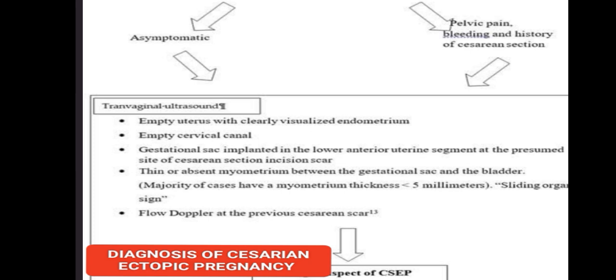It can even extend to the bladder. Similarly, you can see flow on Doppler at the previous Caesarean scar. These are the diagnostic features of Caesarean Ectopic Pregnancy.